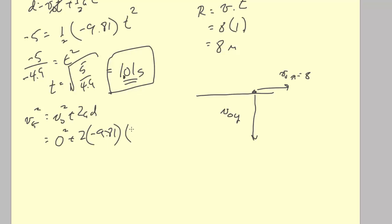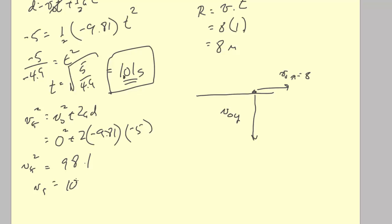VF² = 0 + 2(-9.81)(-5) = 98.1. So VF = √98.1 ≈ 10 m/s. When it hits the ground vertically, it has a speed of about 10 m/s.